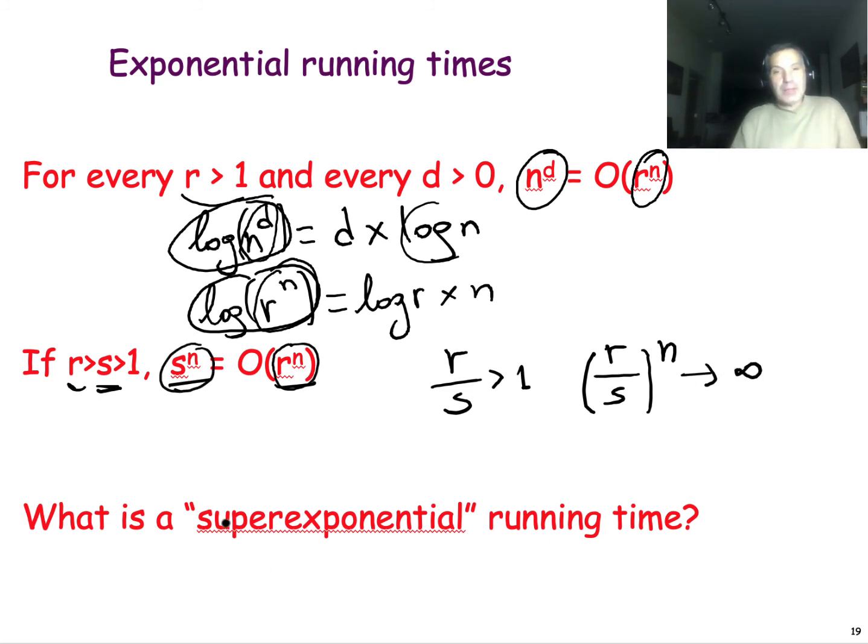Finally, sometimes people talk about super exponential running times. Think about the function n^n. Here, it is an exponential function, but the base also increases. So clearly, any exponential is O of this super exponential function.